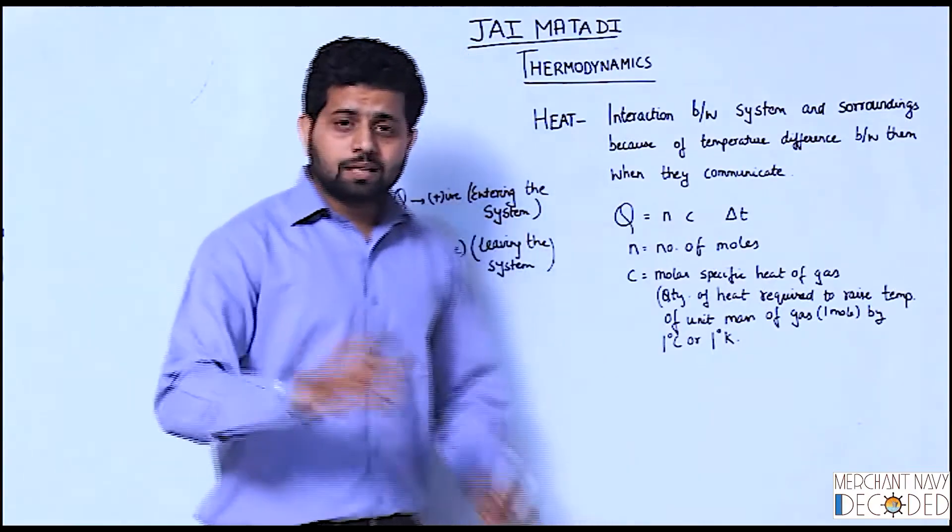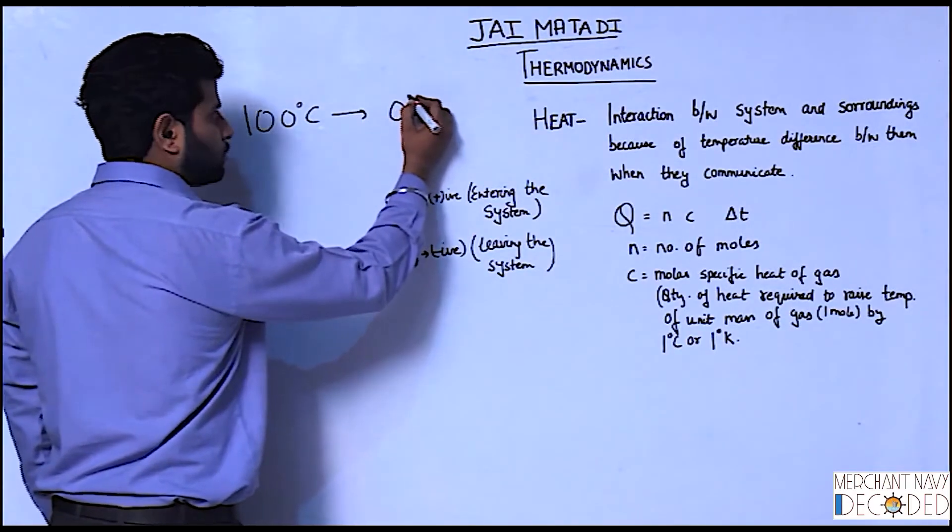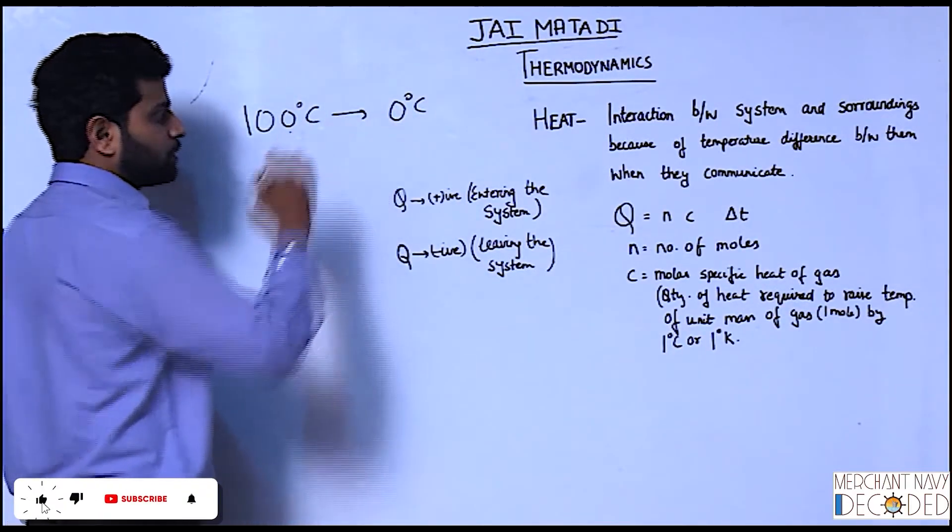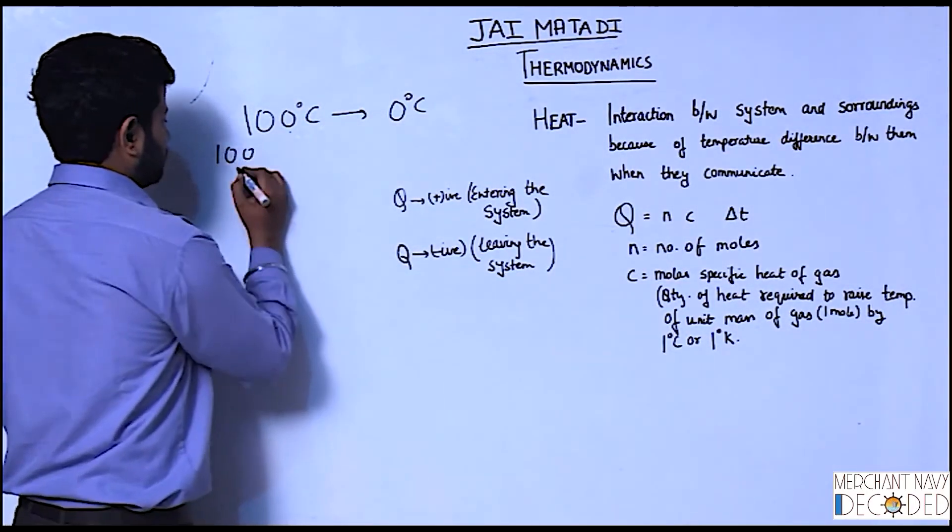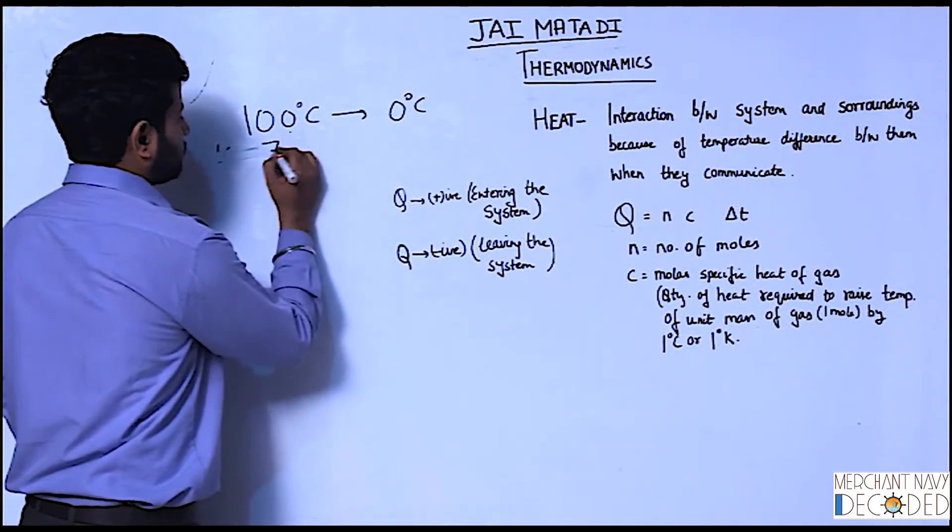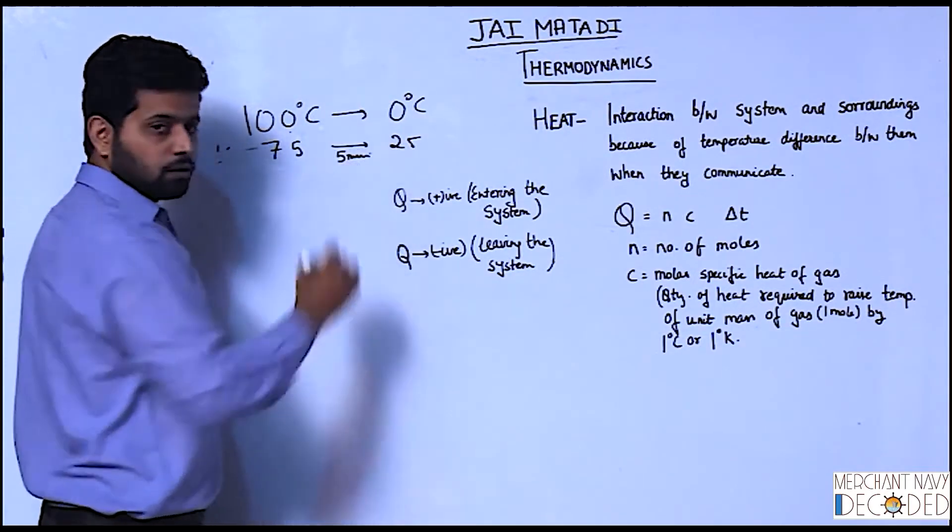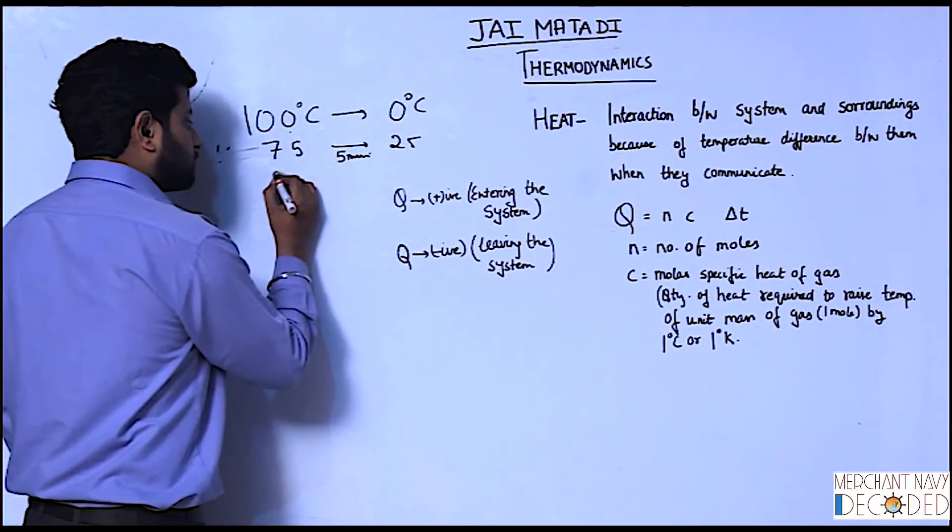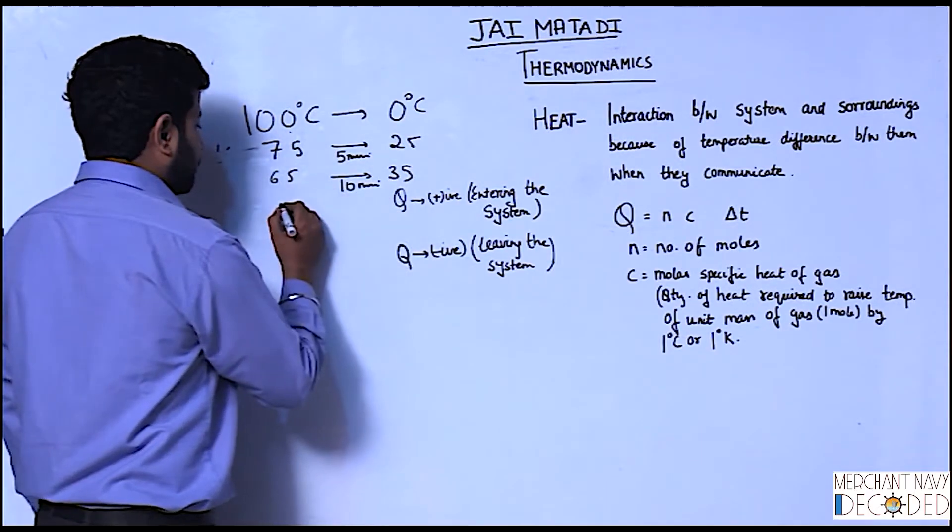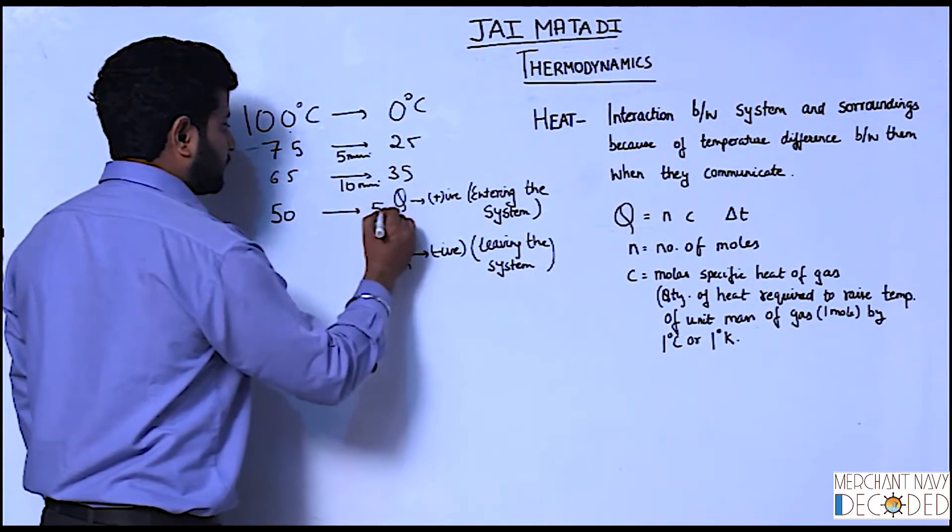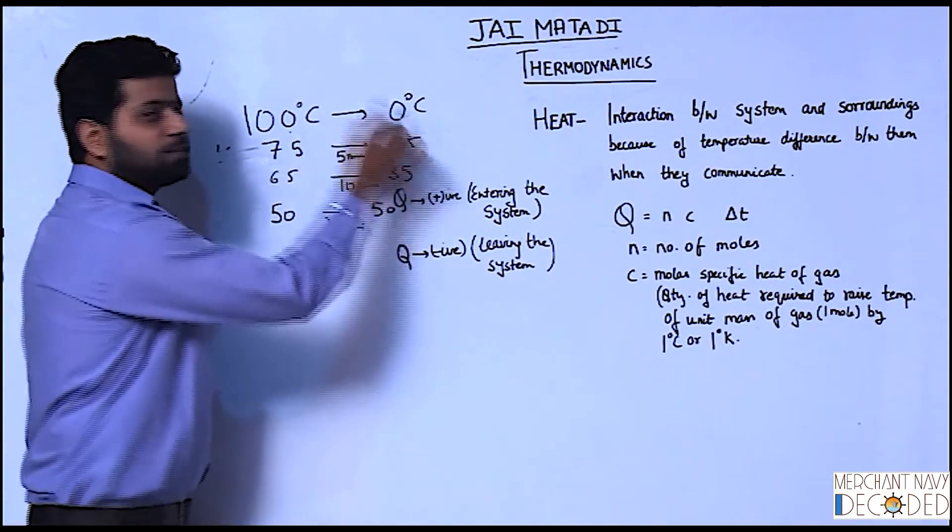What is delta T? Sir, first thing, if I have to say heat is flowing from 100 degree centigrade to 0 degree centigrade, what happens? Initially it flows very fast. Say from 100, it reduces to 75 and it becomes 25 in say 5 minutes. Then from 75 to 65 and this becoming 35, it takes 10 minutes. Then from 65 to 50 and it also becomes 50, it takes 30 minutes. So what is happening, you see, heat flow is more when temperature difference is more.